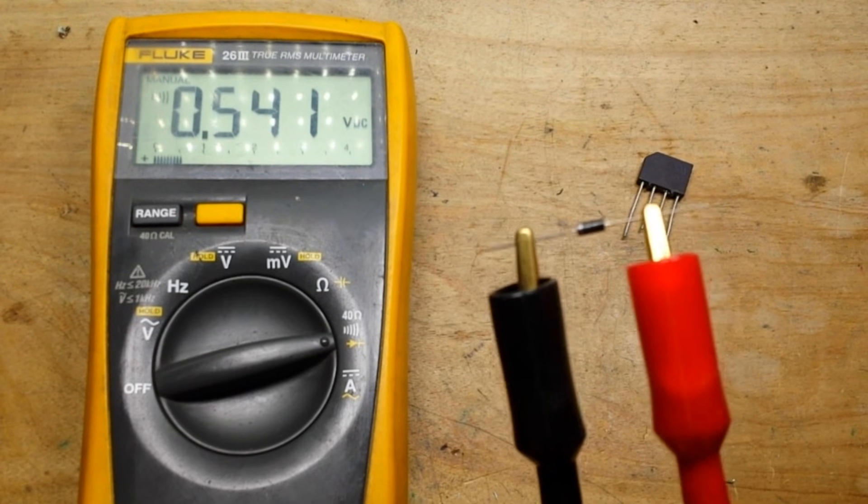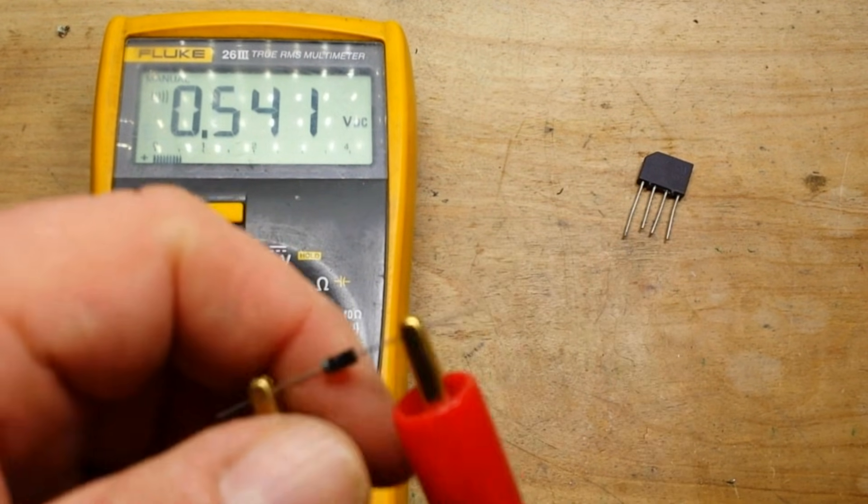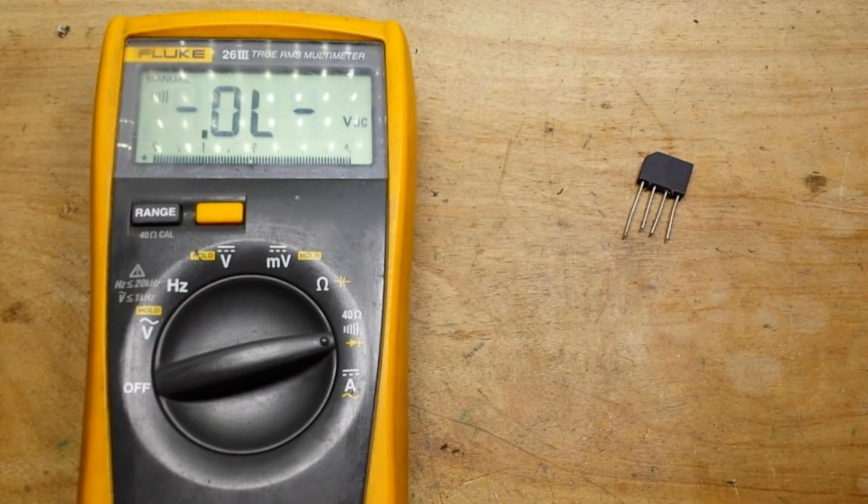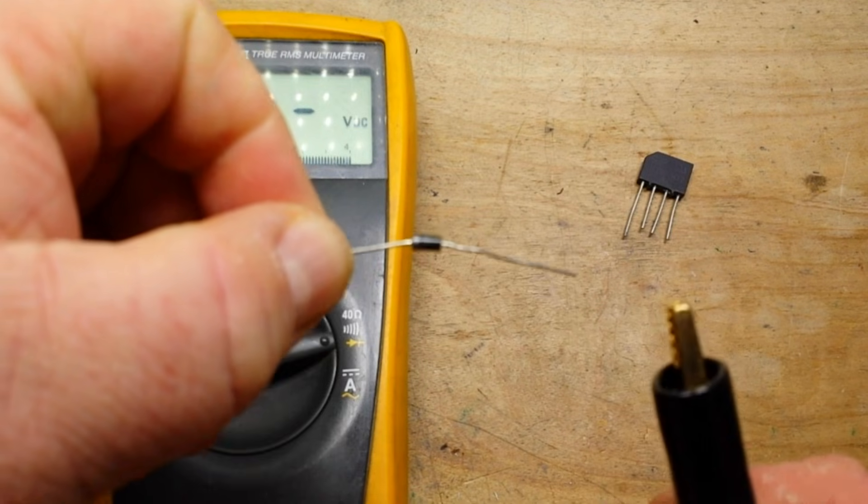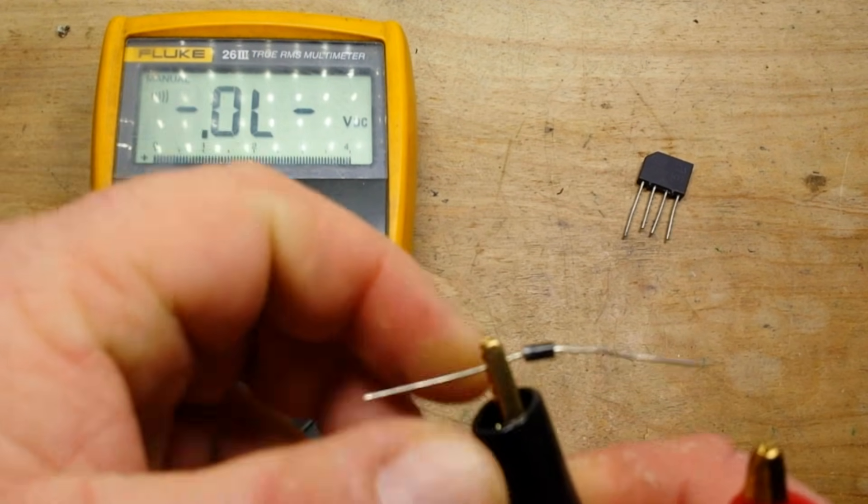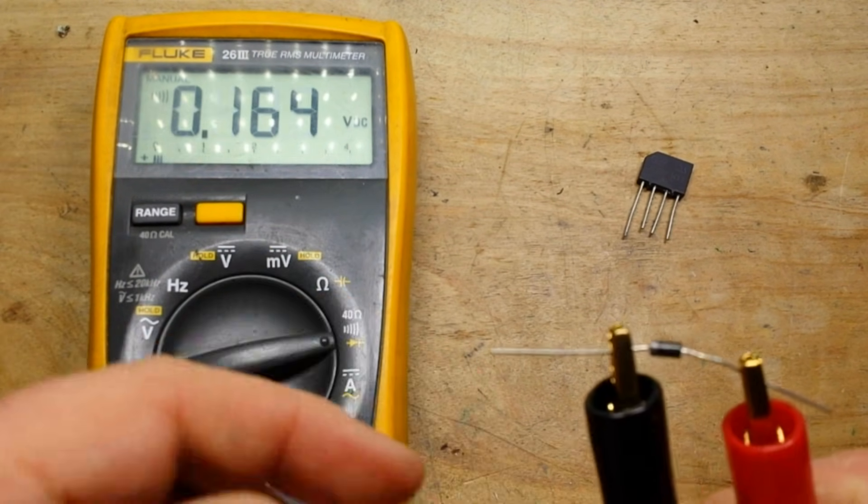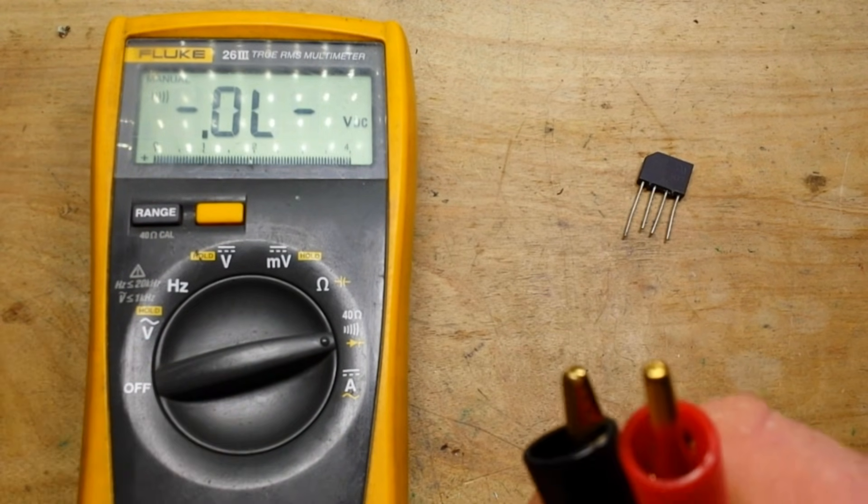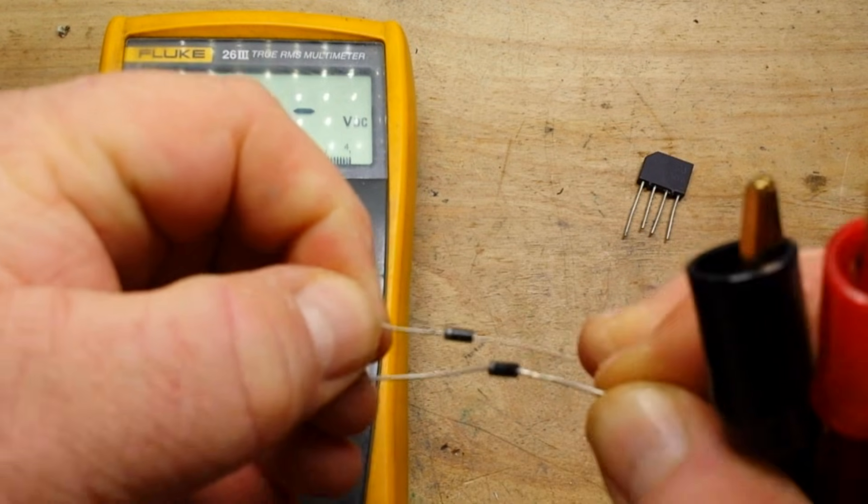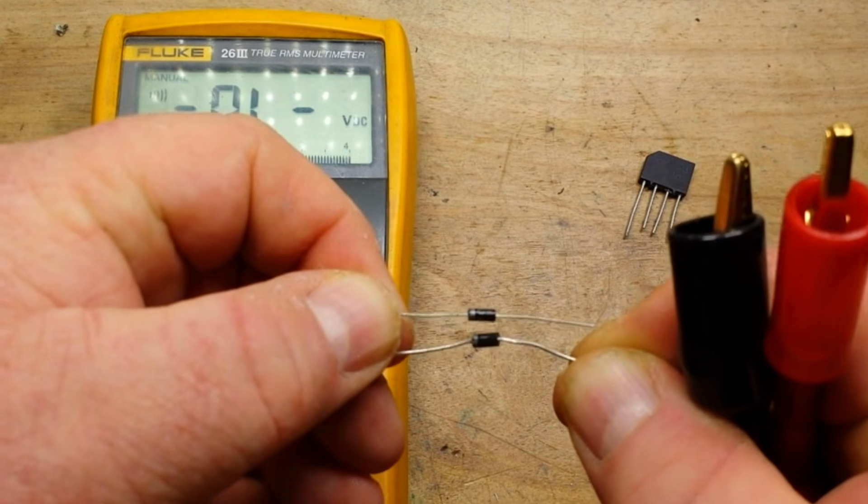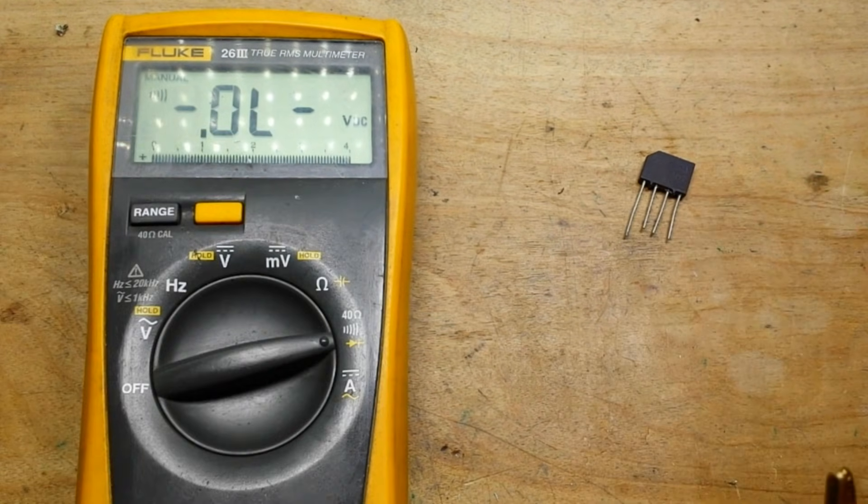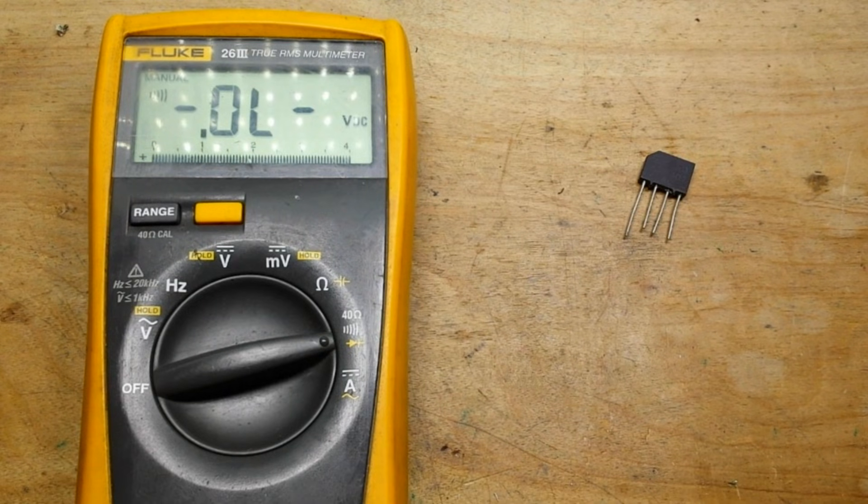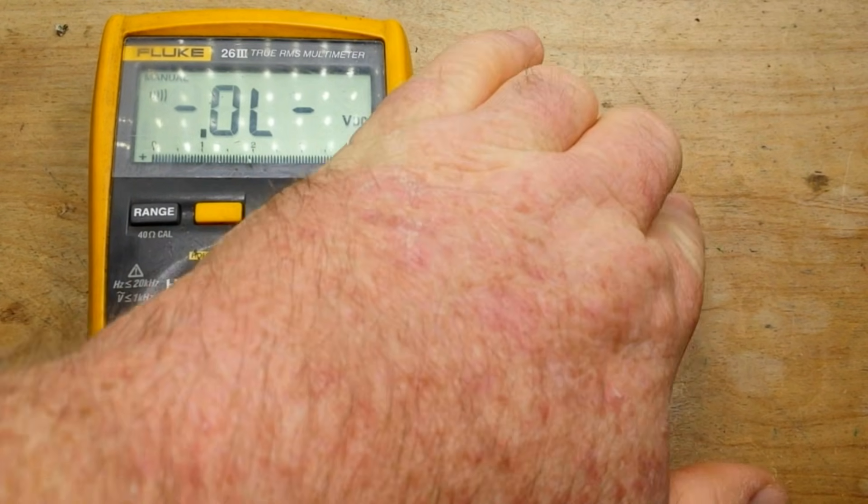Now if on the other hand you have Schottky diodes, well then you're going to see something different. The voltage drop is going to be much lower. Schottky diodes and silicon junction diodes look exactly alike, so you have to tell by the part numbers. Reason I showed you that is so you know what the diode drop looks like.